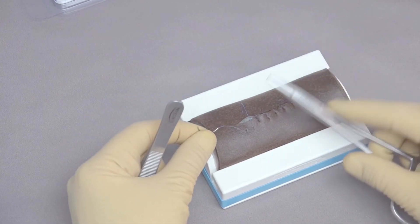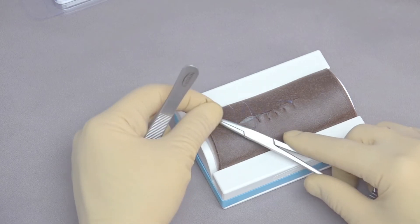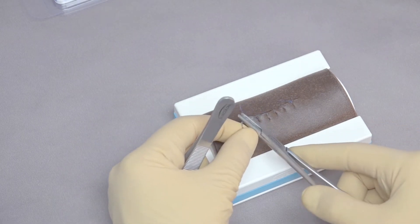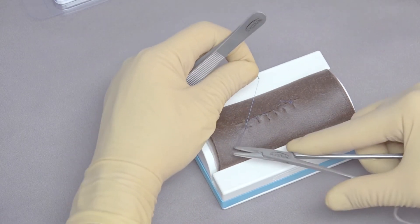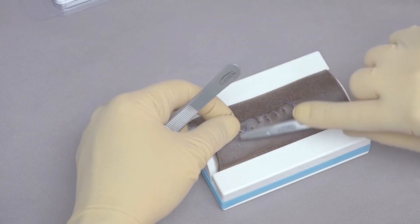To finish the simple continuous knot, we're going to go ahead and put the needle holders in the middle again of the loop. Around the needle holder one time, pull that loop through.